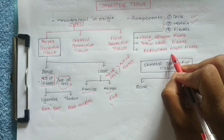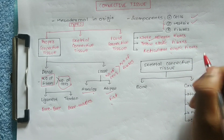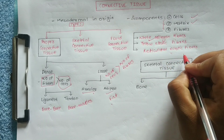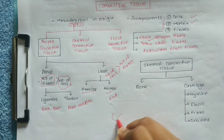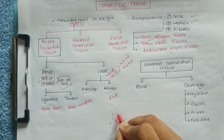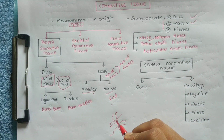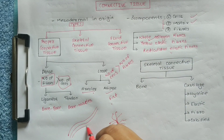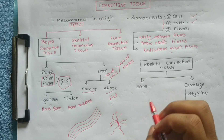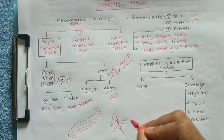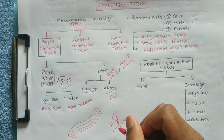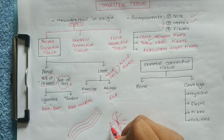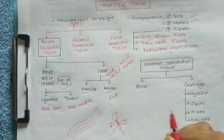Reticulated fibers are short and branched. Yellow elastic fibers are very long and intersect in different directions, running in multiple orientations.